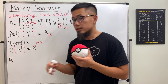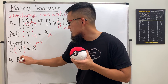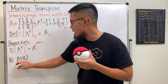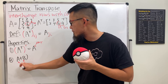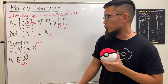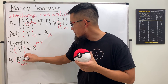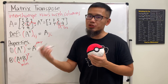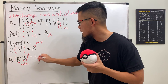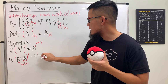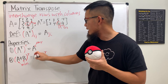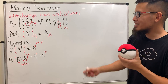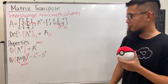Property two: suppose we look at two matrices adding up together. The sum of two matrices — of course when we are adding, they have to have the same dimension, say both are n by n. After we add them and do the transpose, it's the same as doing the transpose first and then adding. So we have A transpose plus B transpose. I think this is fairly obvious as well — you can just test out some examples and you'll see it works really nicely.